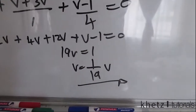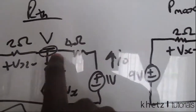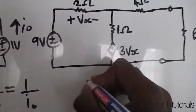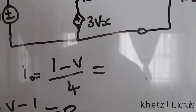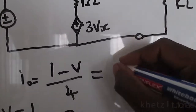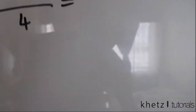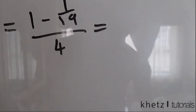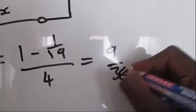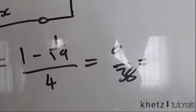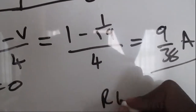We're not done — we need I_o. Looking at the circuit, I_o equals (1 minus v) divided by 4. Substituting v = 1/19: I_o = (1 minus 1/19) divided by 4, which works out to 9/38 amperes.